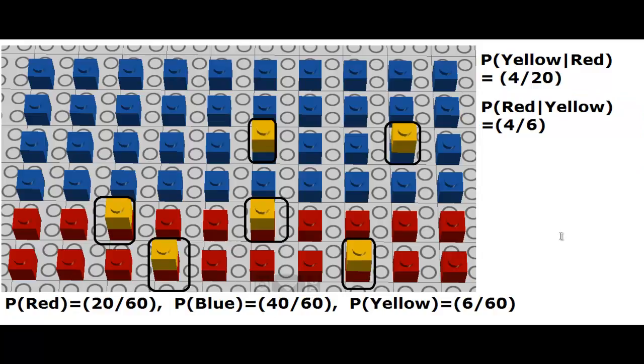So what we have just done is an illustration of Bayes theorem. So if we use the Bayes theorem here, then what shall we have?